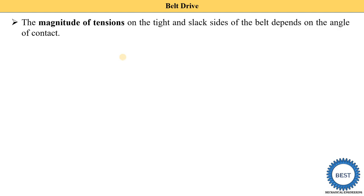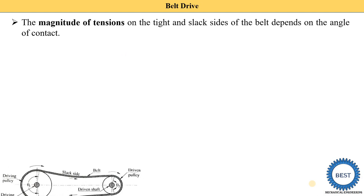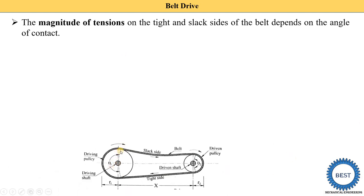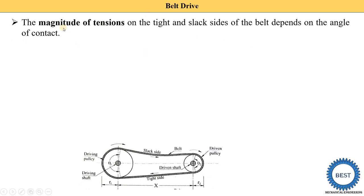The magnitude of tension on the tight and slack side of the belt depends on the angle of contact. The angle of contact is the angle over which the belt and pulley are in contact — since the pulley has 360 degrees, the angle of contact is the portion where belt meets pulley. For a bigger pulley, theta one is the angle of contact and is greater than 180 degrees; for a smaller pulley, theta two is less than 180 degrees.